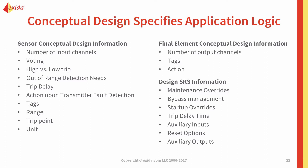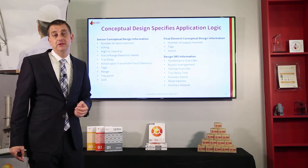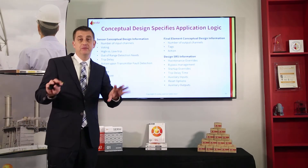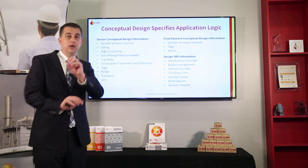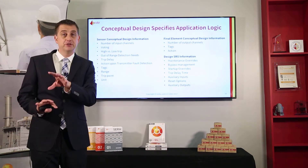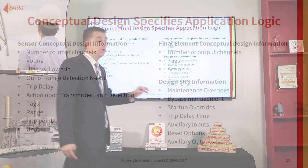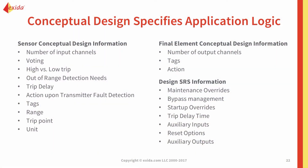On the final element side, we need to know how many outputs we're driving and what the tags are. We don't really look at voting for the outputs because that's a result of how the valves are piped in the field — two valves in series closing on trip is a one-out-of-two; two valves in parallel closing on trip is a two-out-of-two. In either case, the logic solver drives two valves. We also configure whether to energize or de-energize on trip, and based on that we may need to implement different logic.